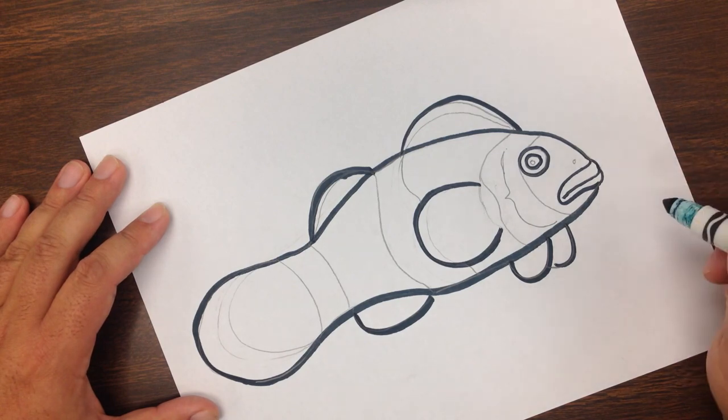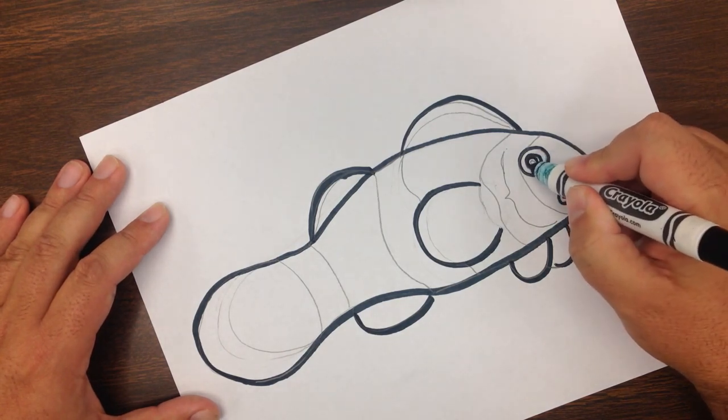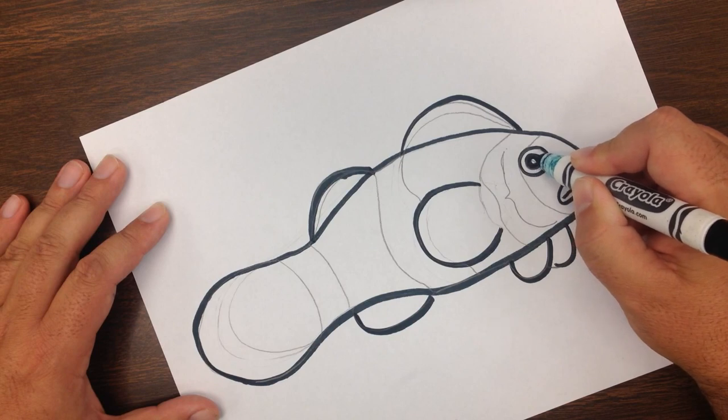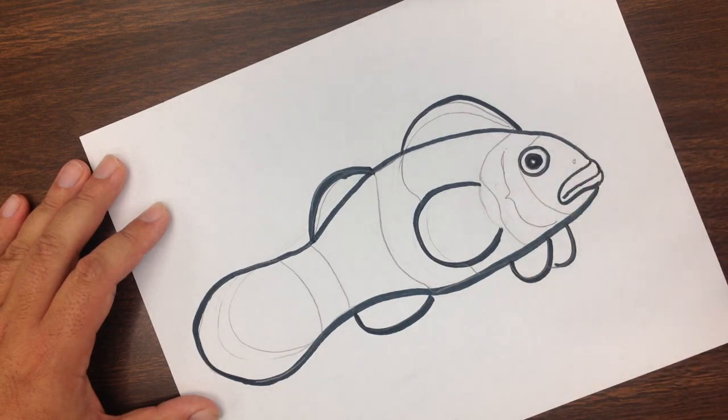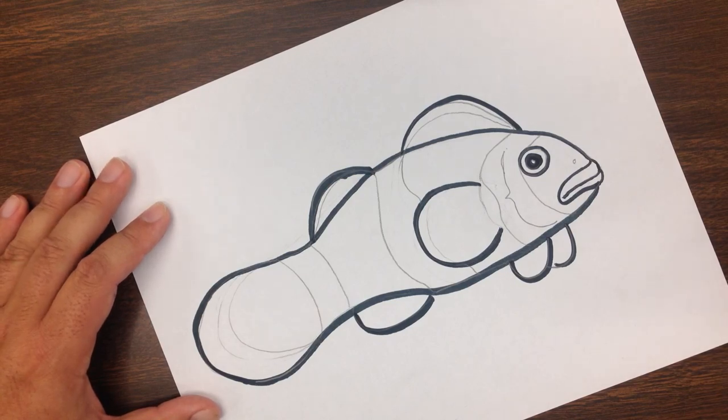Then for the center or pupil of the eye, we'll just color it in and leave just a little bit of a white reflection to make the animal look more alive.